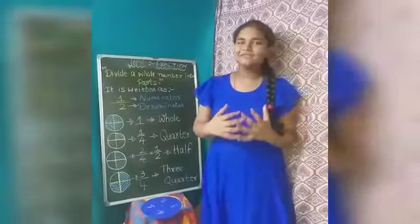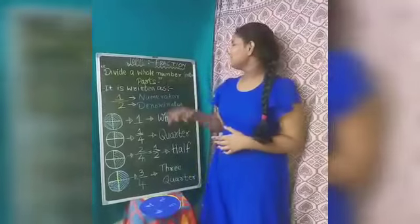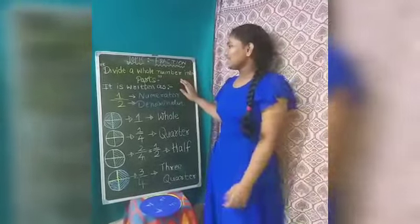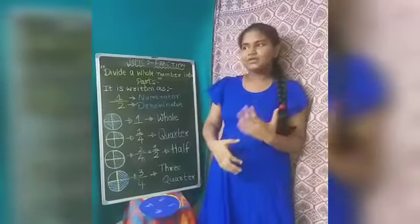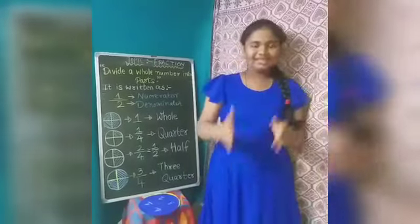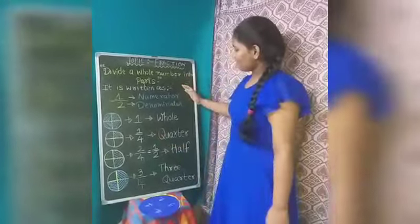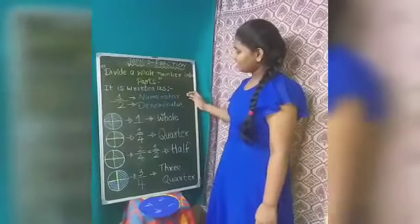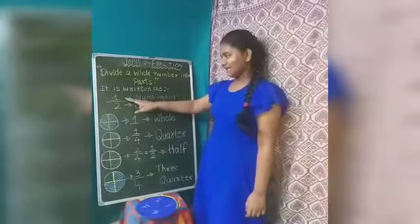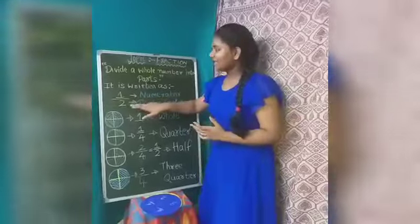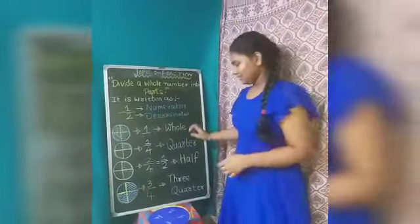Hi everyone, myself Mahashtri. Today we are going to learn fractions. Fraction means dividing a whole number or a whole thing into parts. It is written in the form of numerator and denominator. The number above the line is the numerator and the number below the line is the denominator.